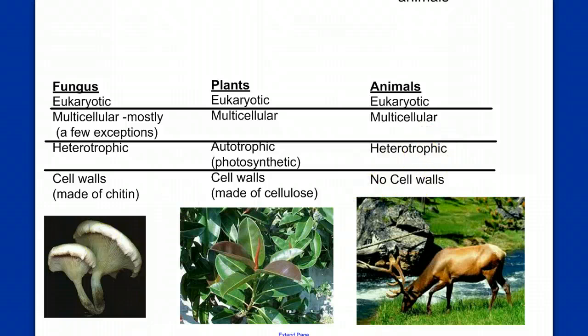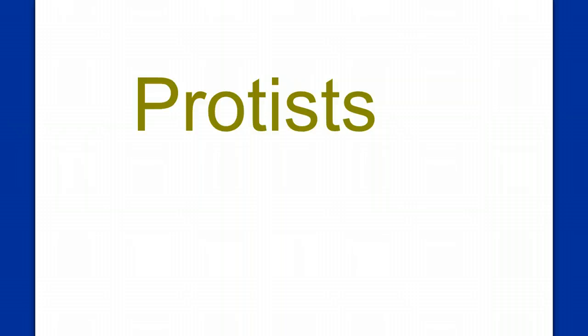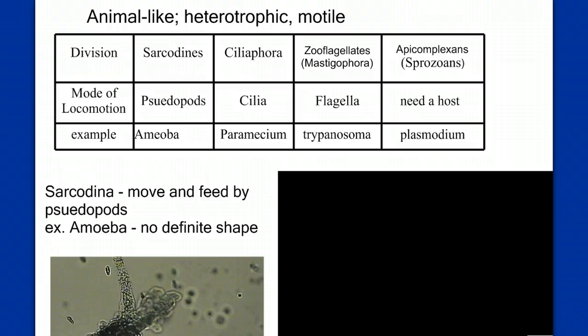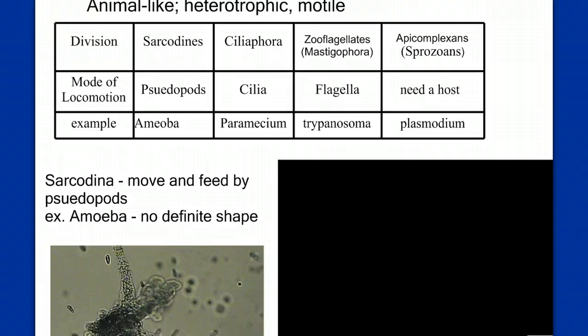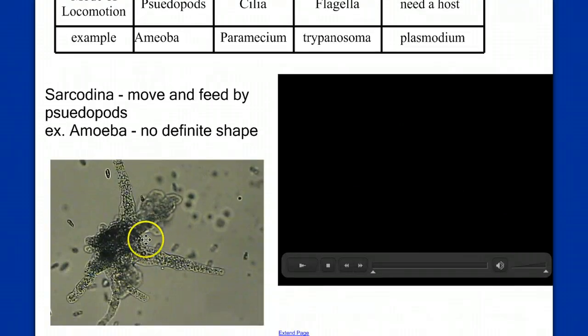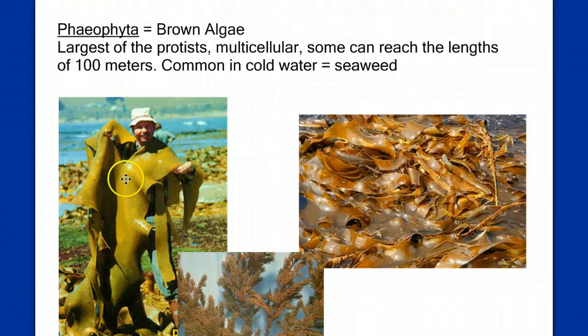So this leaves everything else dumped into the protist kingdom. We're going to see within this kingdom a great diversity. It's very unusual, because in this one kingdom we'll see something simple and small, like a microscopic amoeba, and also something very large and multicellular, like a brown algae. It's a pretty broad categorization — protist.